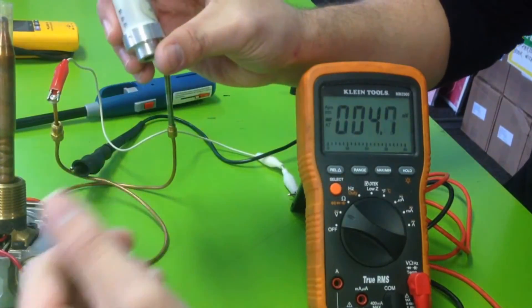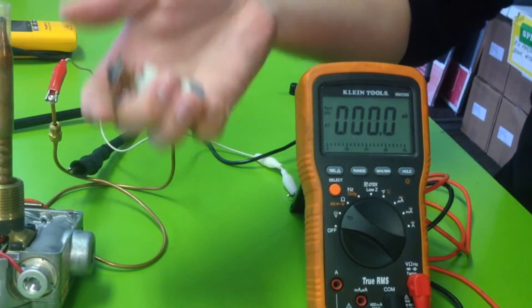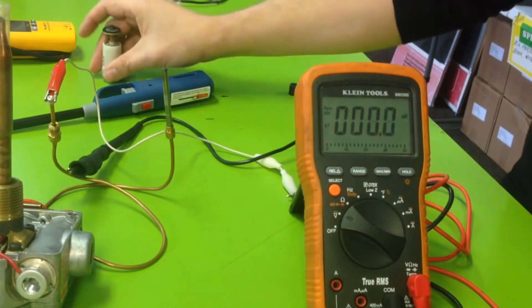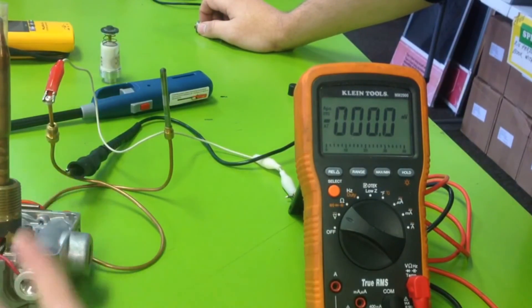Where instead of looking for a millivolt reading, you just simply see if it holds the valve down. That's a more foolproof way of doing it. But the way you do it with the meter - stupid simple. You just hook it up like I just did and you see if it's generating millivolts.